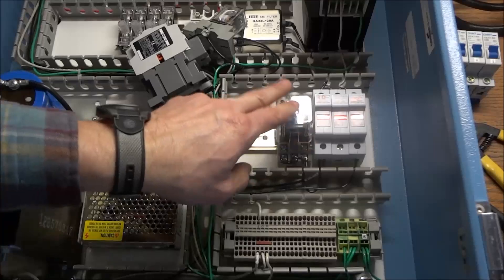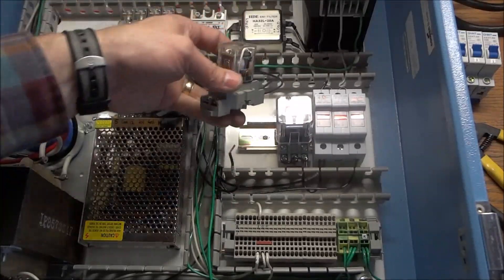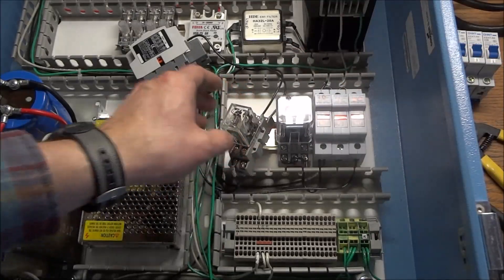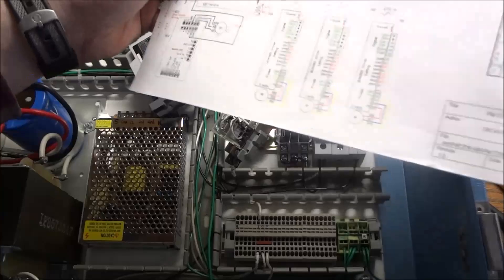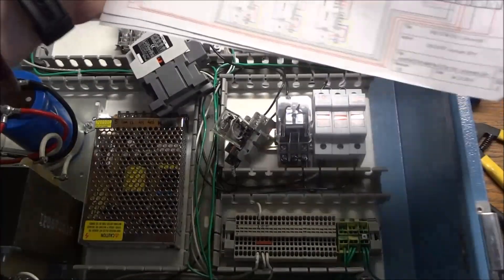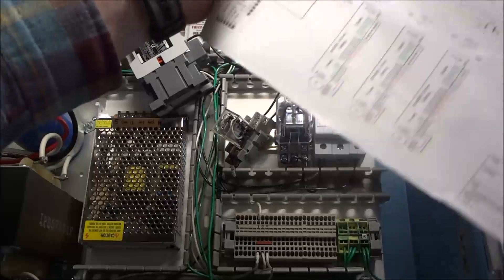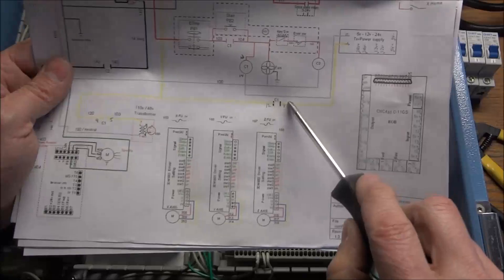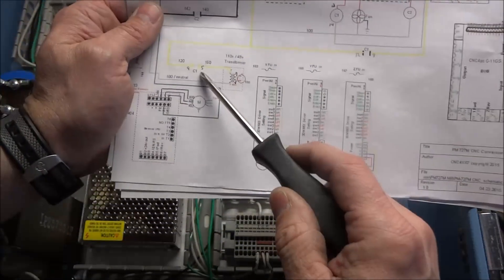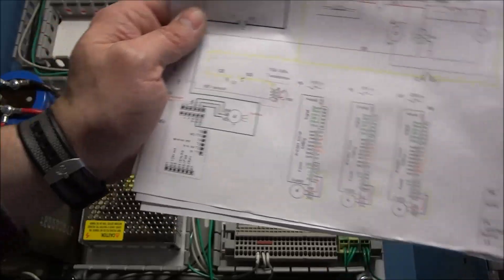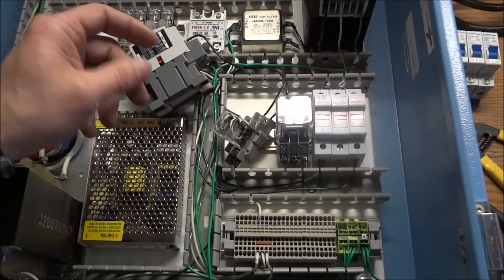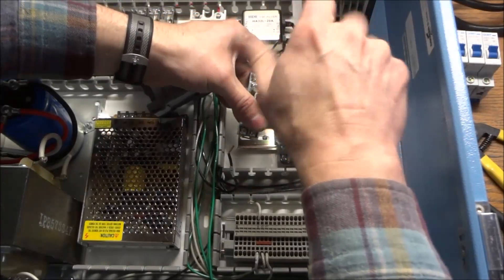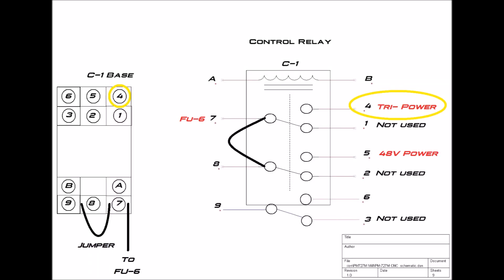Now we have our two wires. Now these two wires are from the other side of the set of contacts. If you remember in the last video this is pin 8 that went to our tri-power power supply and then 5 that went to our 48 volt power supply. So we'll just transfer these over to our new relay and 5 will now go on 4 and 8 will now go on 5.